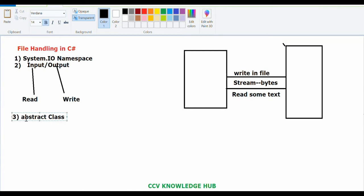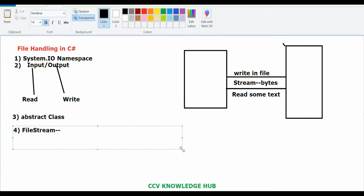Stream is an abstract class — all the methods and everything is defined in it. It acts as a base class for all read and write classes. We also have different classes available under the System.IO namespace. The first one is FileStream class, which is mainly used for reading and writing to any location within a file.